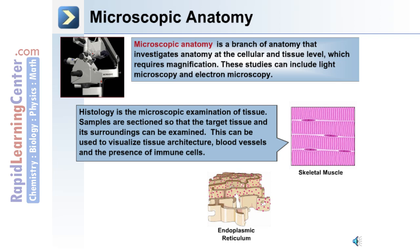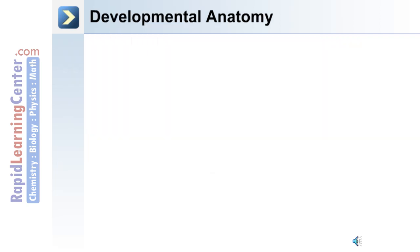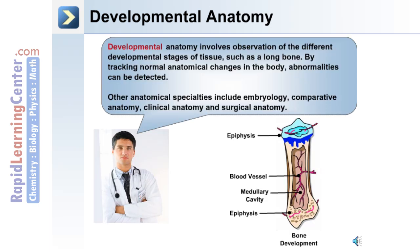Histology can be used to visualize tissue architecture, blood vessels, as well as the presence of immune cells in the area. Anatomy can also be used to track development. For example, a long bone can be monitored at different stages of anatomical development, and the observations can be compared to what's expected at those stages. This way, anatomical changes — either abnormal or normal — can be monitored.